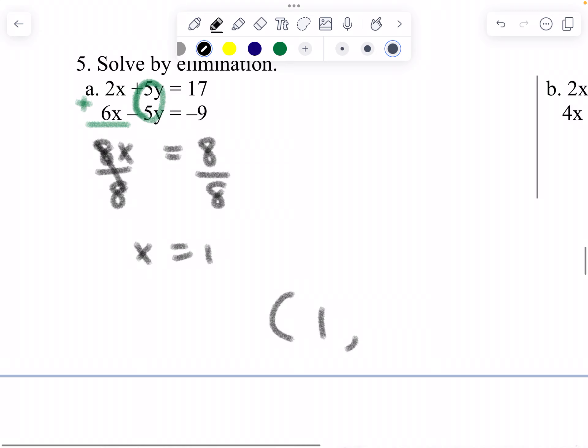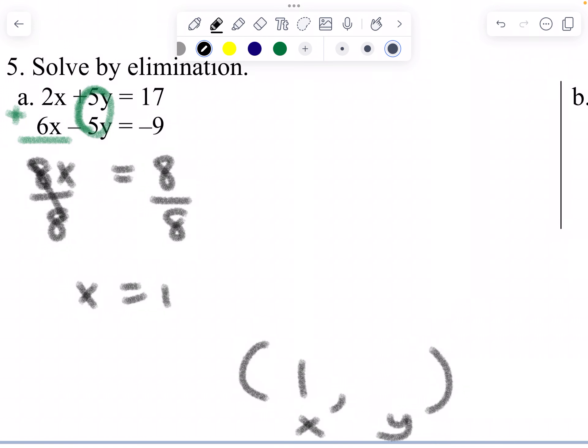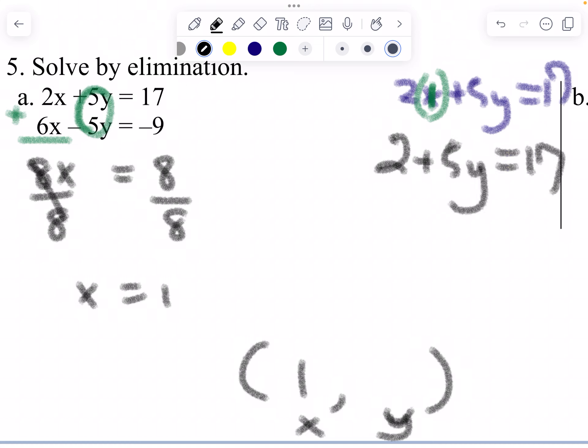So it meets at 1, and first one's x, second one's y. Okay. And then you're going to save the 2x plus 5y equals to 17. Doesn't matter which one you save. X is 1 though. You put 1 in where x is. That's why it says there, x is 1. You get 2 plus 5y equals 17.